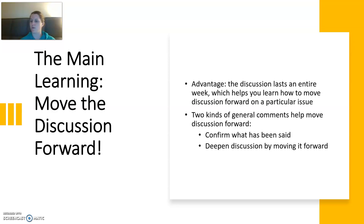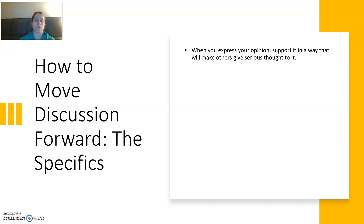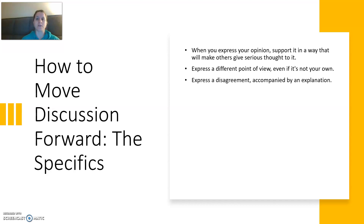The first is to confirm what's been said — for example, 'your idea about raising children really makes sense to me,' or 'thanks for sharing, that was certainly a challenging experience.' That moves discussion forward in a sort of inactive way. The best way is to deepen the discussion — say something like 'could you say more about what you mean by socialism?' or 'I don't see a difference between this theory and this other idea.' When you express your opinion, support it in a way that makes others give serious thought to it. Express a different point of view, even if it's not your own — trying something out like 'I read here that...' even if you don't agree with it can help move the discussion forward. Express a disagreement accompanied by an explanation — you don't want to just disagree, but disagree and explain why, and do that respectfully.